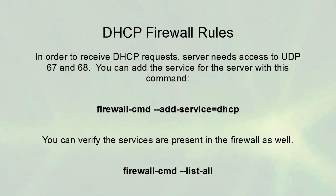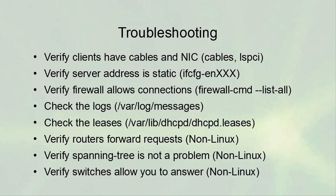To make the firewall rule permanent and persistent across reboots, run 'firewall-cmd --add-service=dhcp --permanent'. You can verify the services present in the firewall with 'firewall-cmd --list-all'. Once your server is running, you can check your messages log, but if clients aren't getting addresses, start troubleshooting.